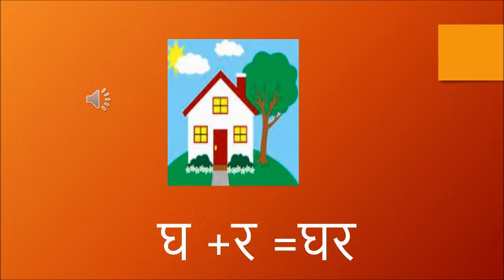Now moving on to the next one. Gha — ghar wala gha, and ra wala rat. Together it makes ghar. Ghar is a house.